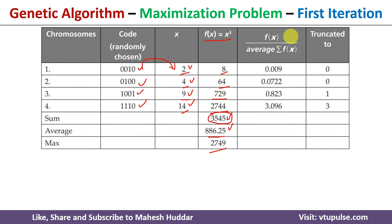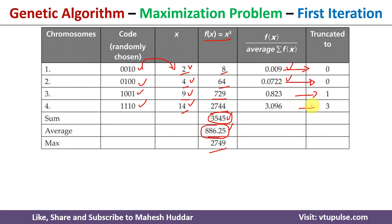Once you calculate f(x), the next step is to calculate f(x) divided by the average of the summation of f(x), which is 886.25. So the first value is 8 divided by 886.25, which equals 0.009; 64 divided by 886.25 equals 0.0722, and so on. Once you calculate these values, we need to round them off. Rounding gives 0, 0, 0.823 rounds to 1, and 3.096 rounds to 3.